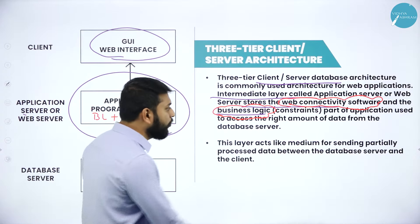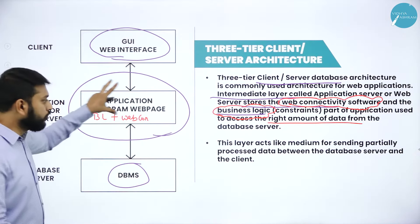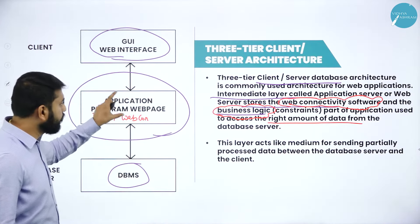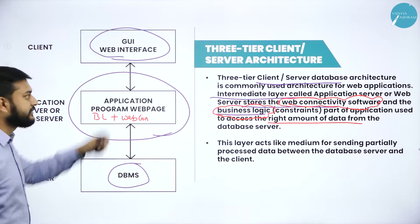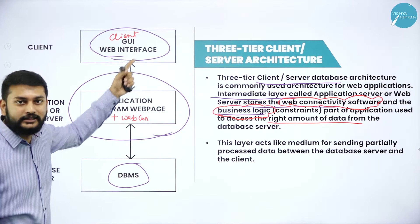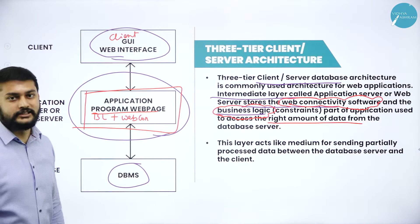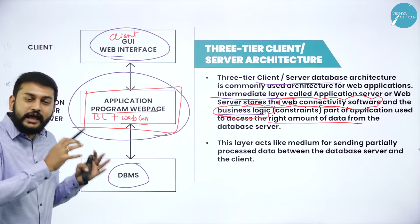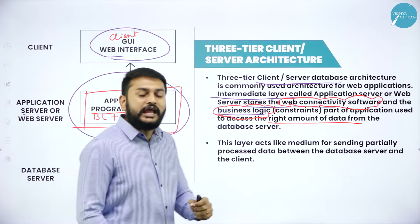The business logic and web connectivity decide what part of the data to retrieve from the database server and send back to the client. In summary, you have the GUI as the client, then an intermediate layer — the application program or web page containing business logic and web connectivity — and then the database server. That is how the three-tier architecture works.